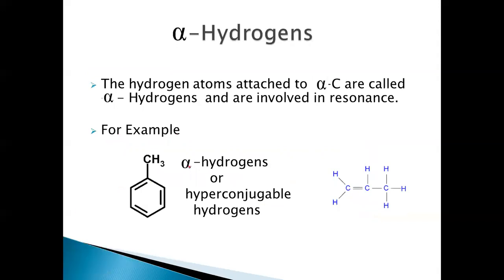Before going into what hyperconjugation is, let's define alpha hydrogens. Taking methylbenzene as an example, the CH3 group is attached to an sp2 (double-bonded) carbon. That carbon is called the alpha carbon, and the hydrogens on it are called alpha hydrogens, or hyperconjugable hydrogens. In this alkene example, the carbon attached to the double-bonded carbon is the alpha carbon, and there are three alpha hydrogens — these are responsible for hyperconjugation.